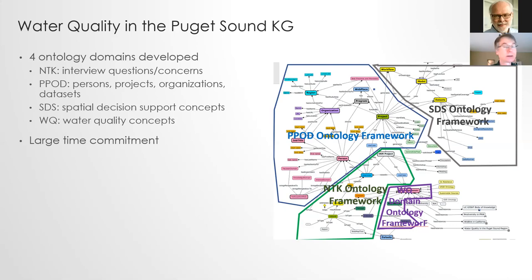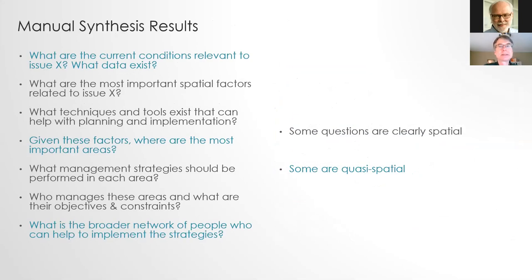The prototype knowledge graph had four domains of ontologies: the need-to-know questions — the actual interview questions, concerns, and resources themselves; PPOD, which stands for Persons, Projects, Organizations, and Datasets; spatial decision support concepts about maps, data models, and analytical tools; and finally water quality concepts, the main subject matter of this knowledge graph. A large time commitment was needed to put this together in a largely manual fashion. Broader concepts that emerged were common questions, some clearly spatial — like 'what are the most important spatial factors related to Issue X' — and some not necessarily spatial, like 'what are the current conditions relevant to Issue X and what data exist.'